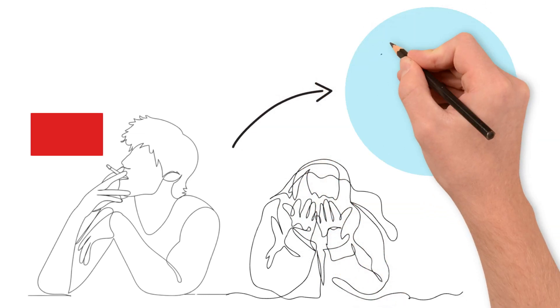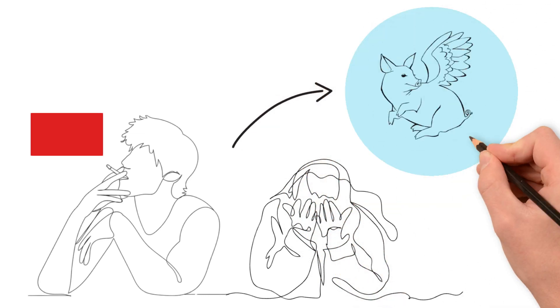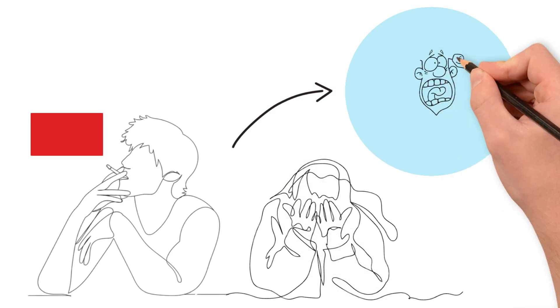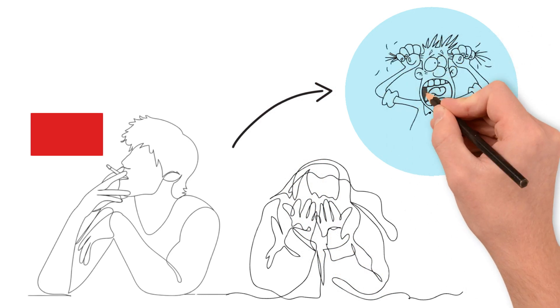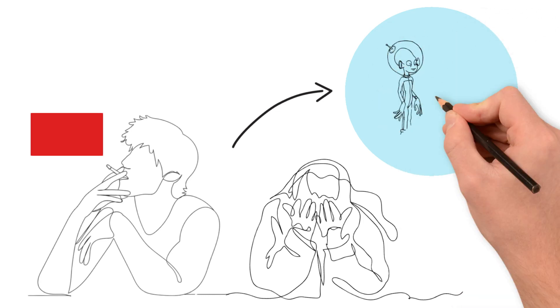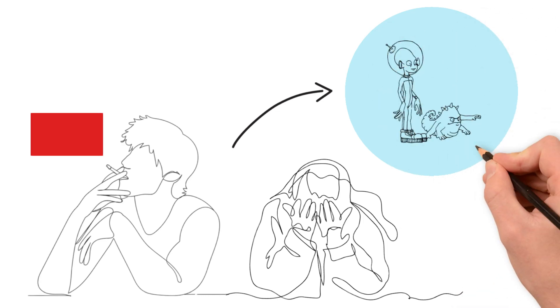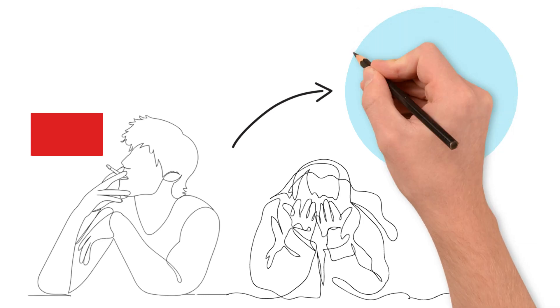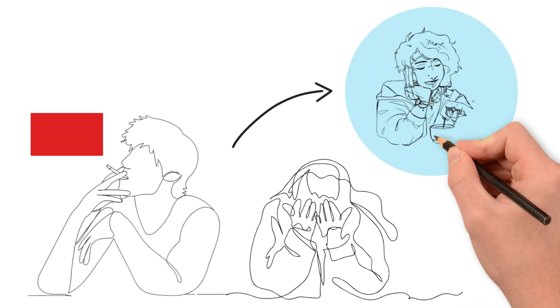Hearing voices or seeing things that others don't. Feeling suspicious and paranoid, like everyone is against you. Having strange beliefs that others think are weird, like aliens are reading your mind. Losing touch with reality, feeling like you're in a dream or movie.